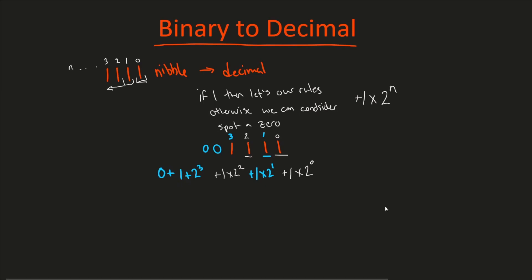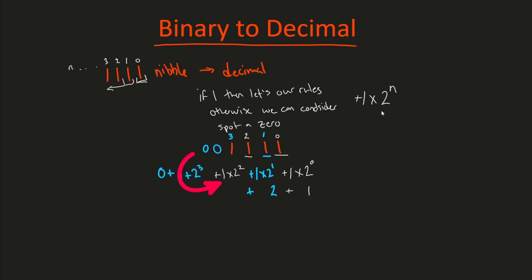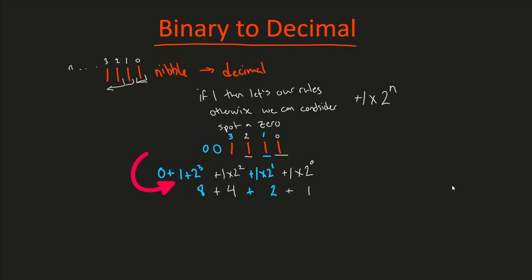And finally, we're getting to the third slot to complete our nibble, and we'll do one times two to the third power. There are no more bits, so we can consider those zeros. Let's work this out. One times two to the zeroth power — anything raised to the zeroth power is just one — so one times one is still one. Next, two to the first power is just two, so one times two is two. Then one times two to the second power: two squared is four, and four times one is still four. Finally, two to the third power is eight, and eight times one is eight. So it's eight plus four plus two plus one. What does that equal? 15. And now you have your decimal form of this number.